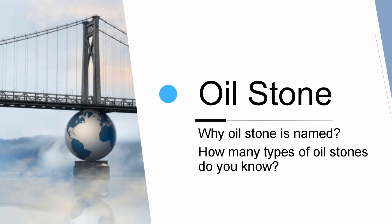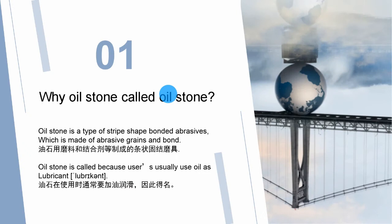There are two questions. Why is oilstone named oilstone? Oilstone is a type of stripe sheet bonded abrasives, which is made of abrasive grains and binder. Oilstone is called oilstone because users usually use oil as lubricant.